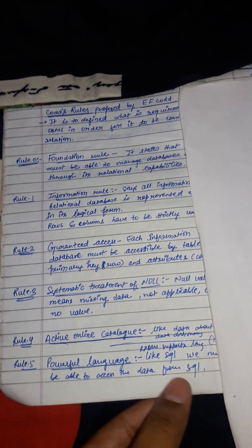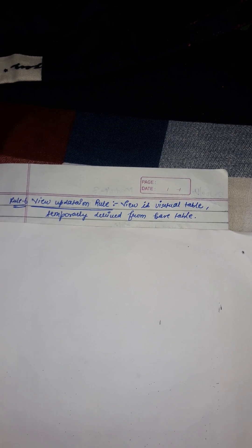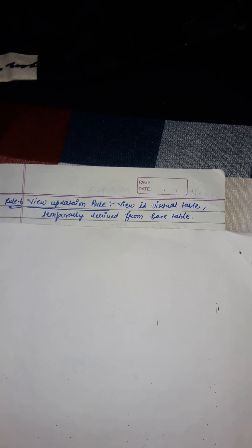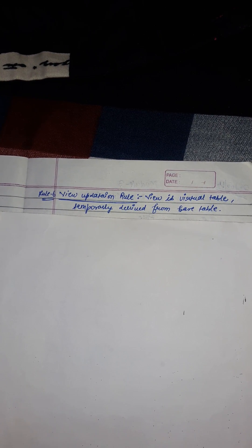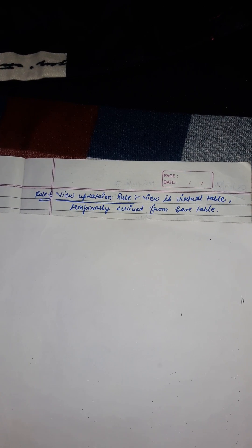Rule 6 is the view updation rule. A view is a virtual table temporarily derived from a base table. Data can be presented in different logical combinations called views. Each view should support the same full range of data manipulation that has direct access to a table available.